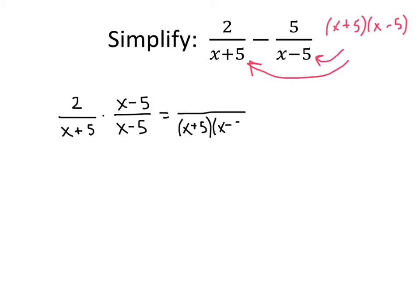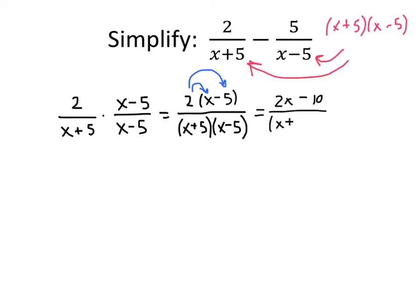There's no reason to multiply that out in this situation. And on the top, we get 2 times the quantity (x minus 5). Now that we do want to multiply out, because that's going to make it easier to simplify a little bit later. When we multiply 2 times (x minus 5) and distribute, we get 2 times x and 2 times negative 5. So we get 2x minus 10 on the top, and (x plus 5) times (x minus 5) on the bottom.